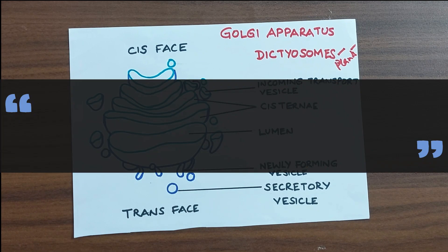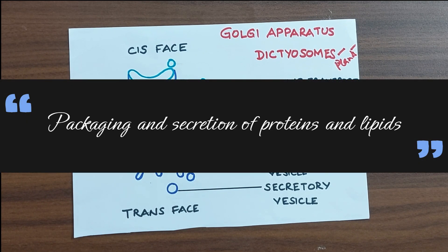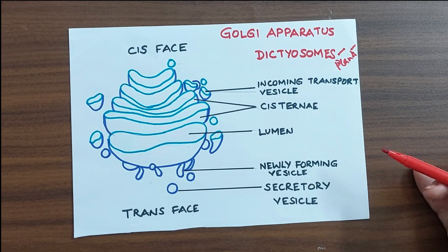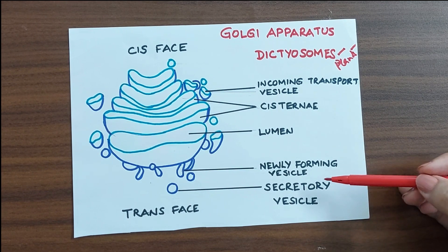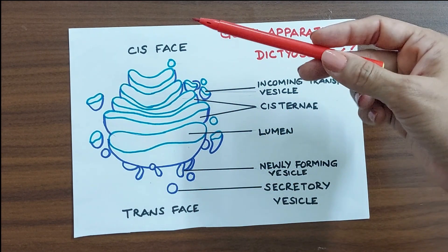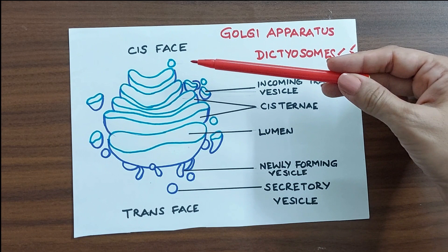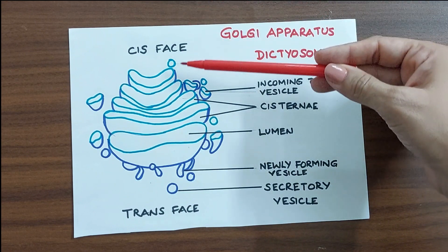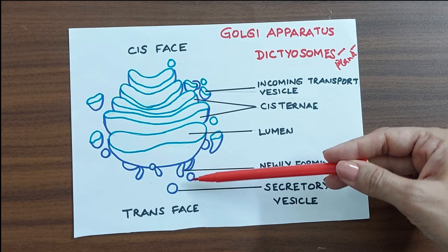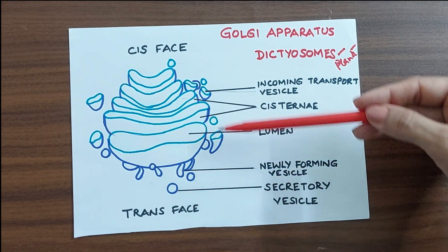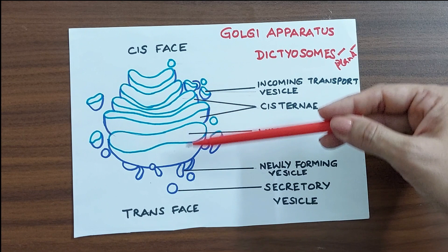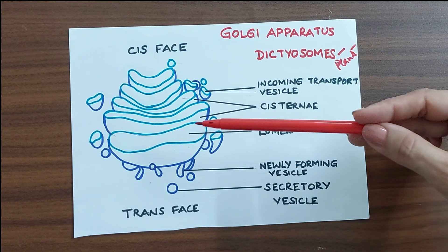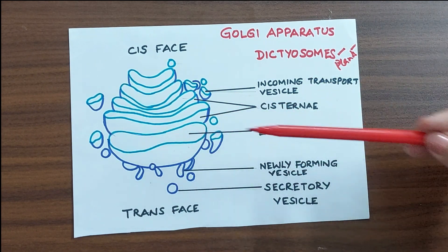Functionally, the Golgi apparatus is the secretory organ of the cell and it helps in the formation of secretory vesicles and lysosomes. So Golgi apparatus has two ends. One is called the cis phase and the other is called the trans phase. Cis phase is the direction through which Golgi apparatus receives its contents. Trans phase is the site through which it packages all these materials and then dispatches these packages in the form of secretory vesicles or lysosomes. The inner gap of the cisternae are known as the lumen.